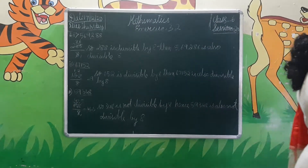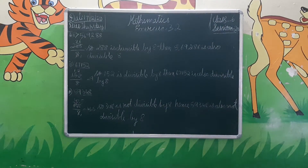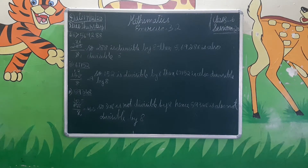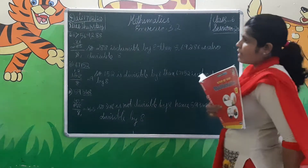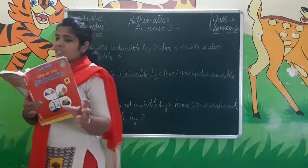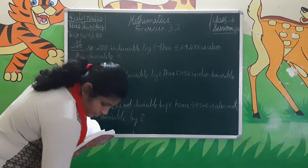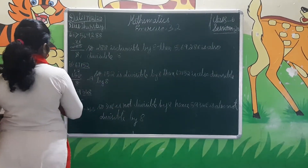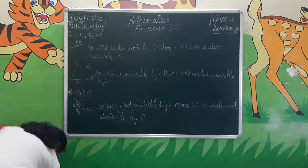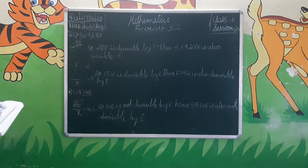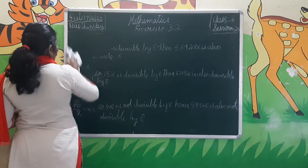Now come to the 7th problem: using divisibility rules to determine which of the following numbers are divisible by 5 and 10. Numbers ending in 5 or 0 are divisible by 5. Numbers ending only in 0 are divisible by 10.